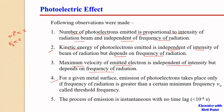The fourth observation was that for a given metal surface, the emission of photoelectrons takes place only if the frequency of radiation is greater than a certain minimum frequency called the threshold frequency, denoted by ν₀.